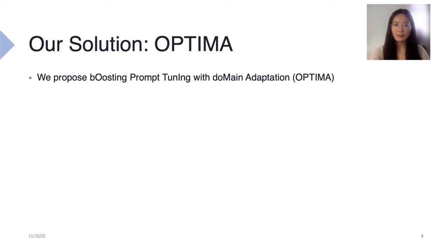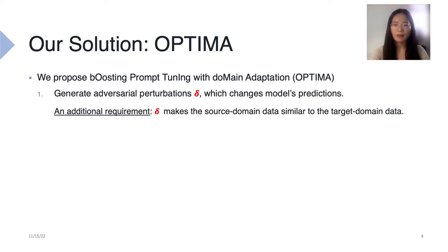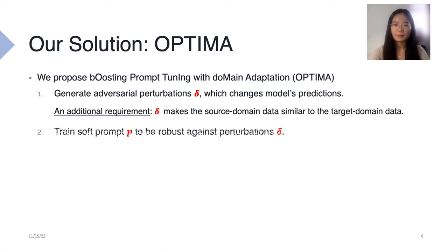Now we introduce our solution, Optima, named after boosting prompt tuning with domain adaptation. Optima works by alternating two optimization steps during training. On the first step, it generates adversarial perturbations that change the model's predictions, introducing an additional constraint requiring the source domain data to be similar to the target domain data. On the second step, it trains the soft prompt to be robust against the perturbations.